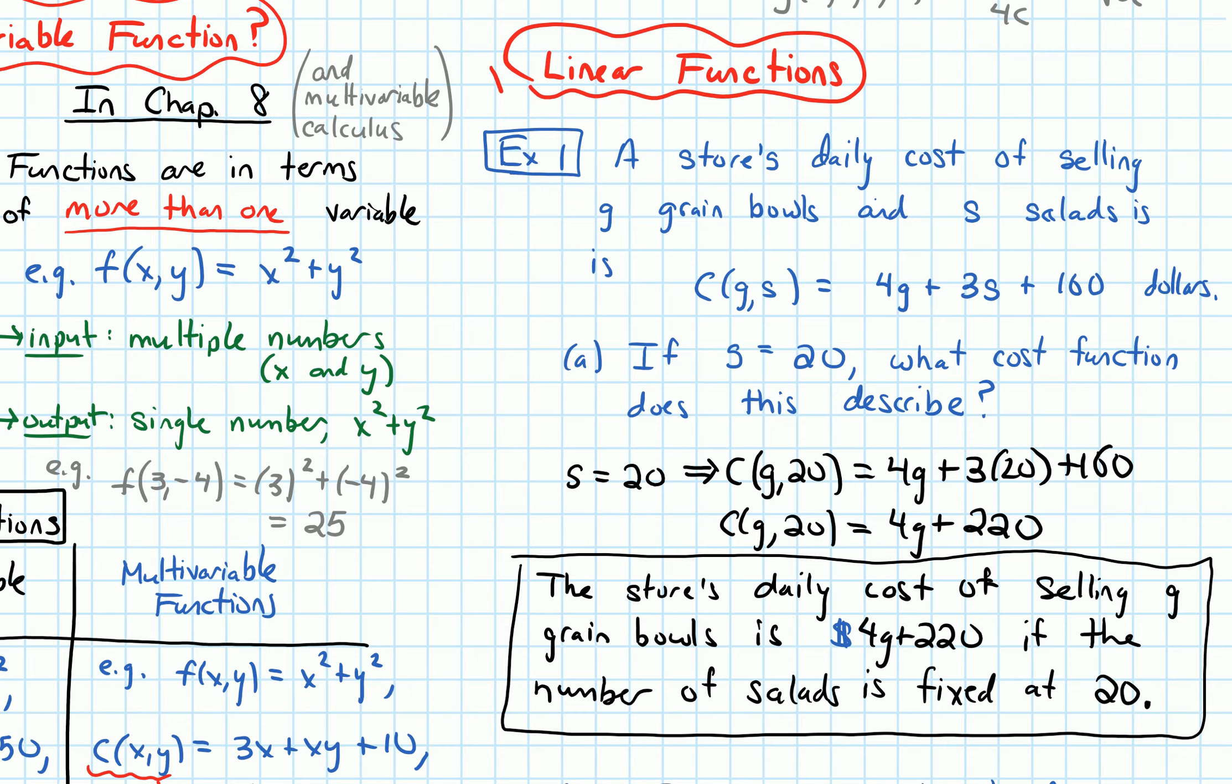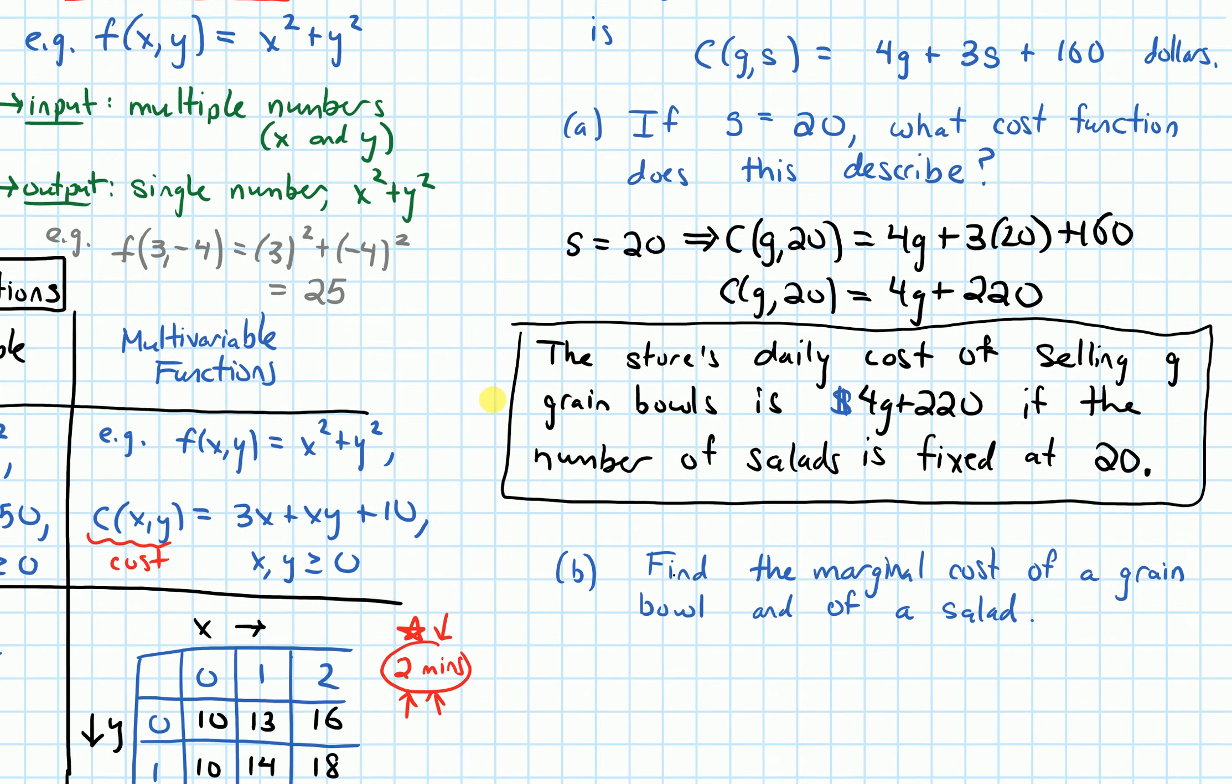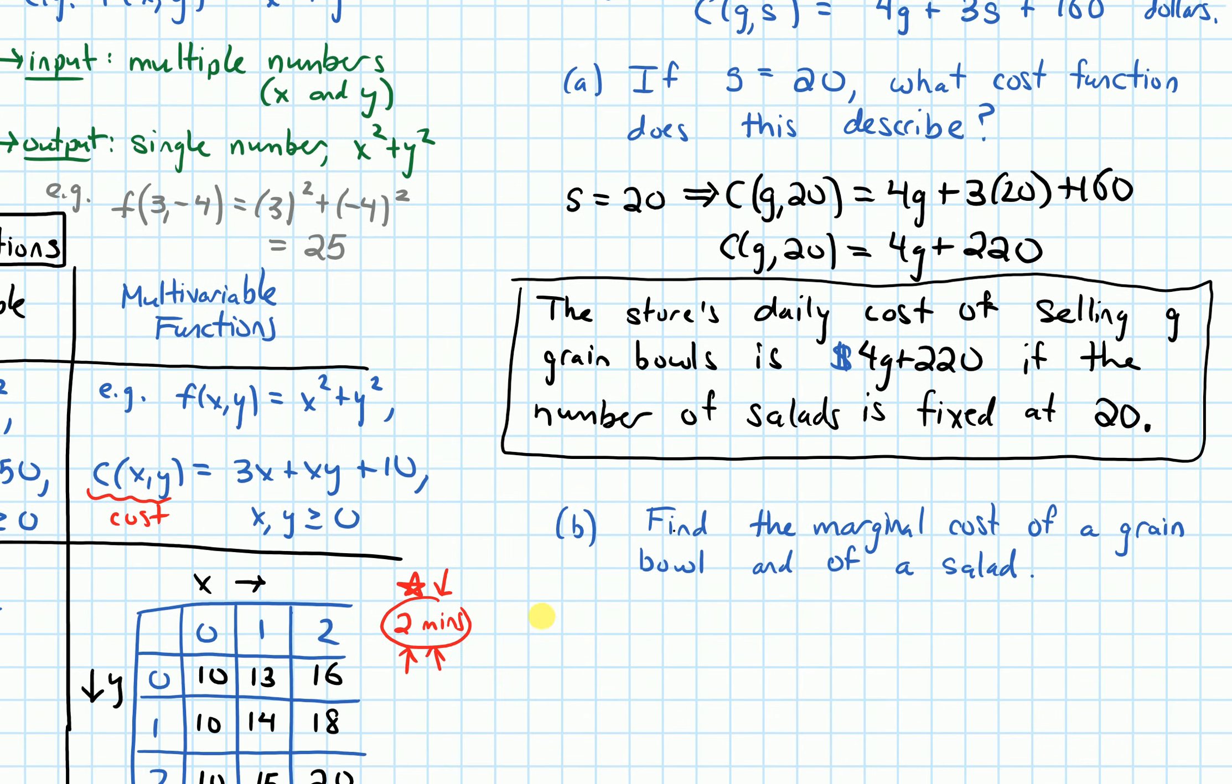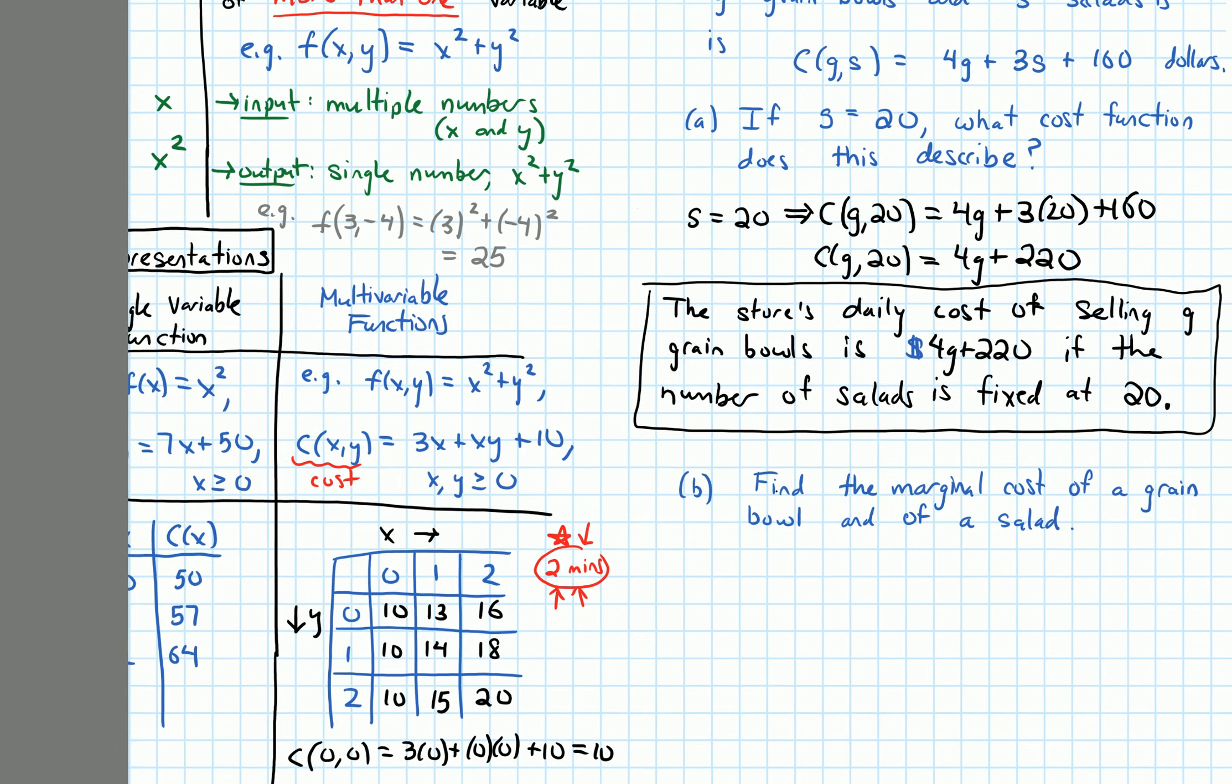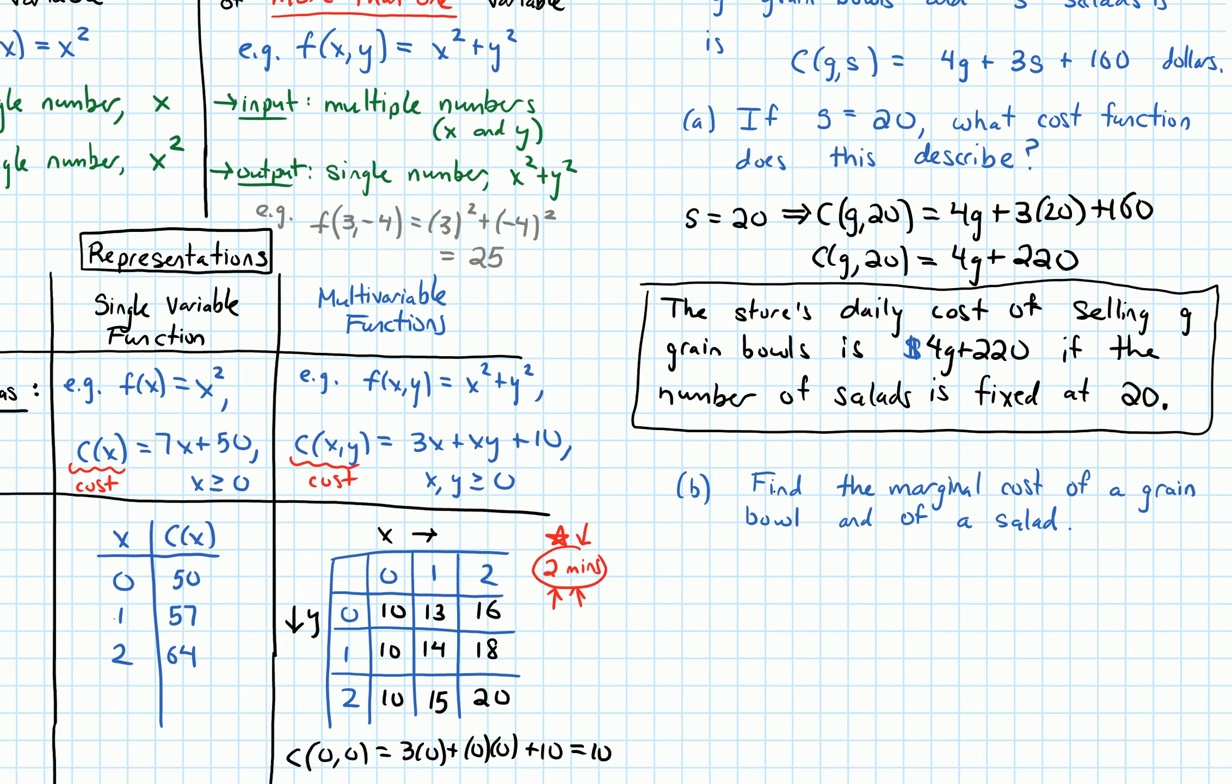Alright, so now let's do part B of the question. And part B is asking, I'm going to zoom out a little bit for this so I can still see my cost function. Find the marginal cost of a grain bowl and of a salad. Alright, so let's begin with the grain bowl.